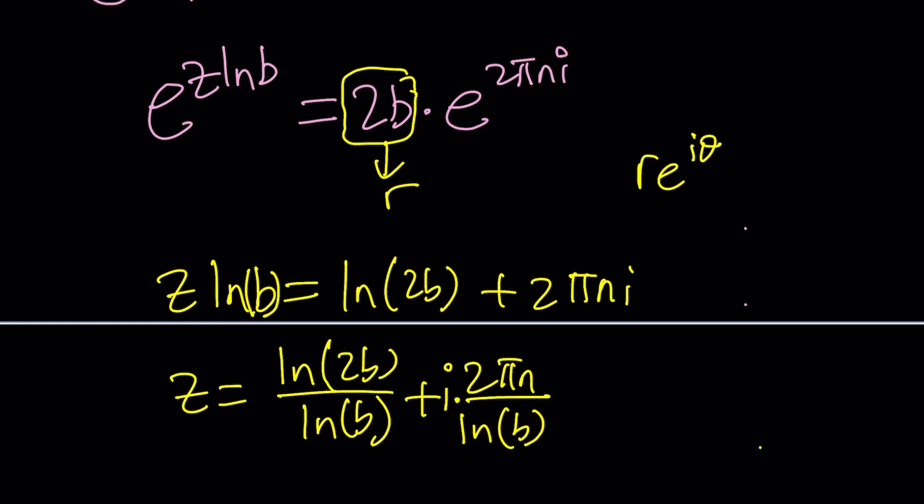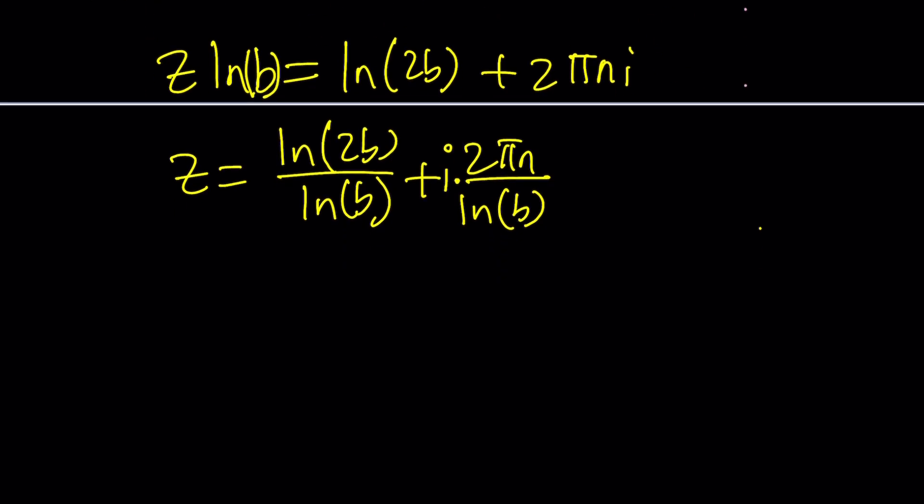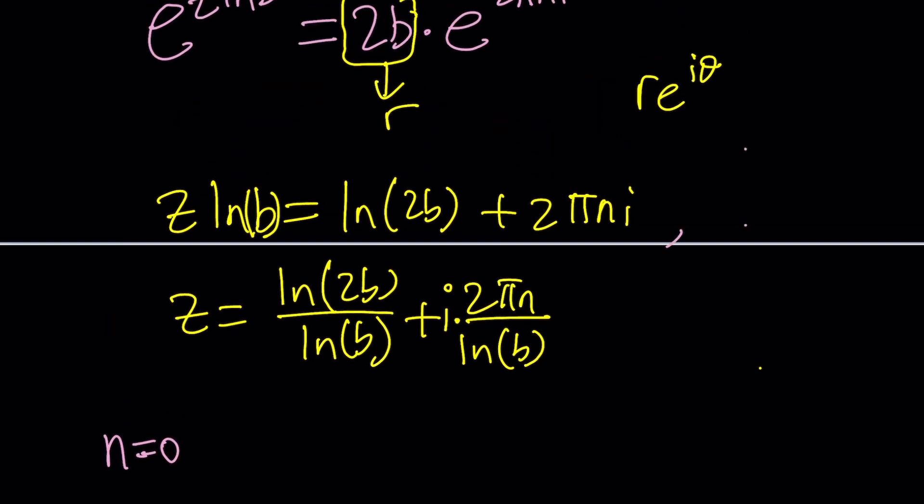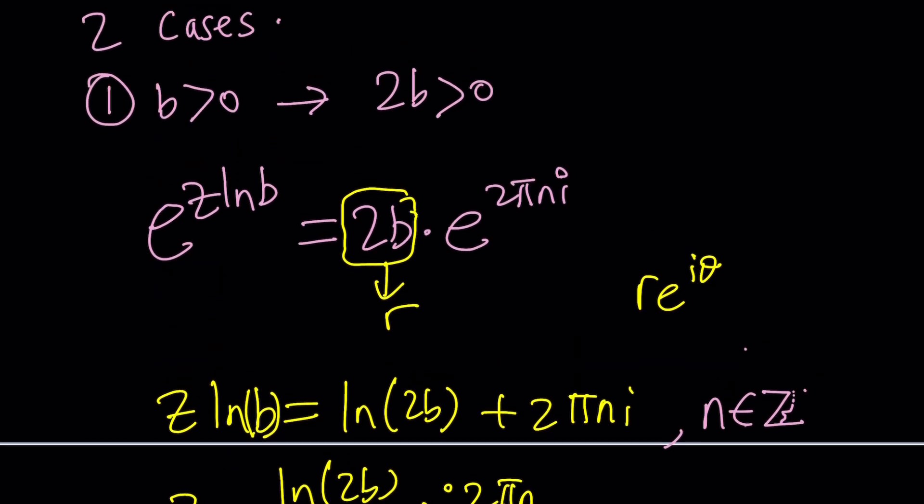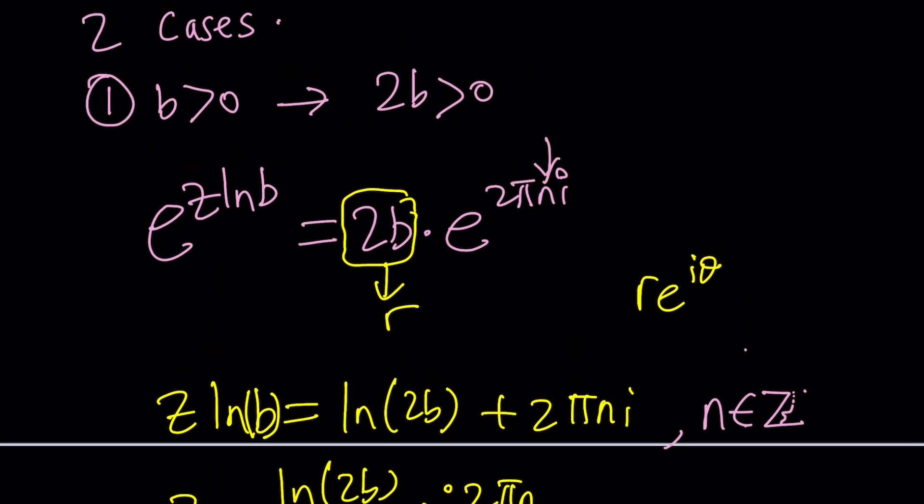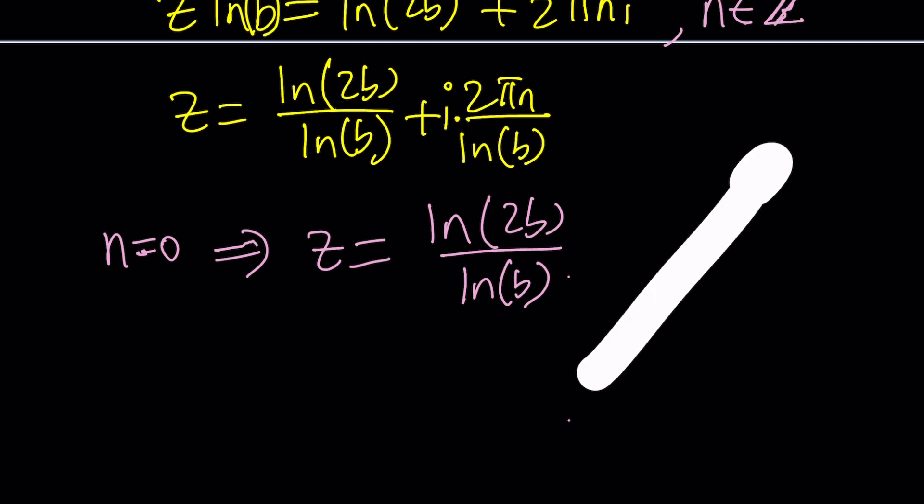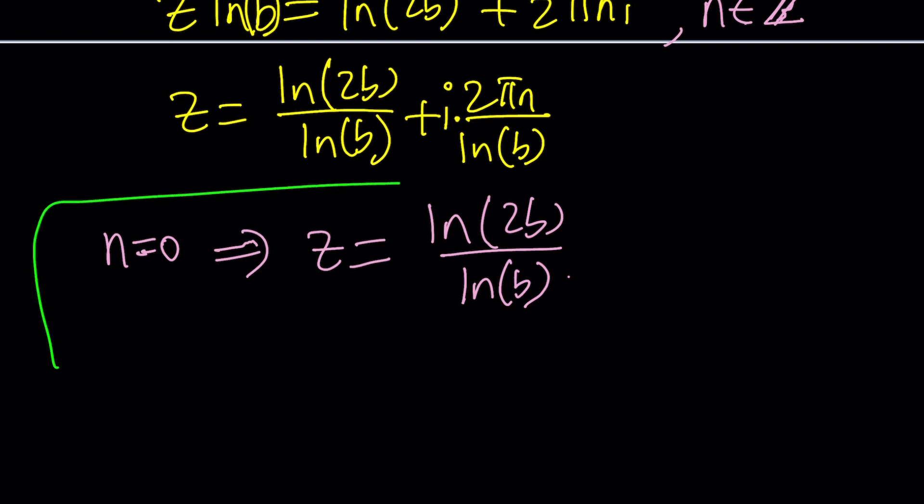That seems to be the solution for positive values of B. Let's look at the principal value. If n is 0, Z will be ln 2B over ln B. That should be the particular solution, but this would be the general solution. Let's go ahead and take a look at the second case, because I think the second case is more interesting.